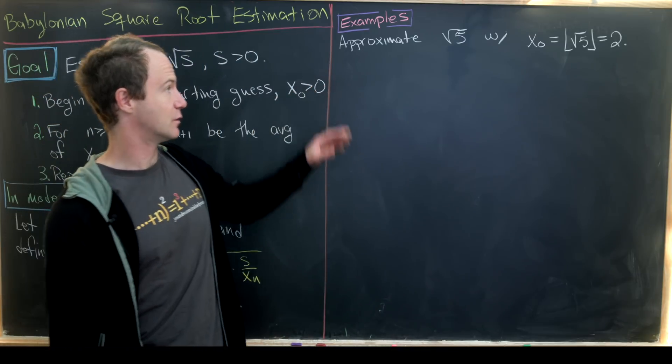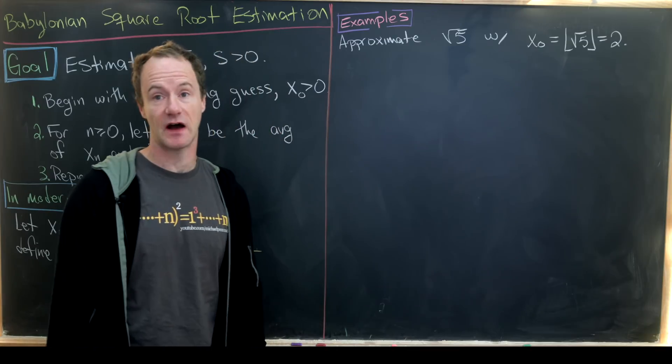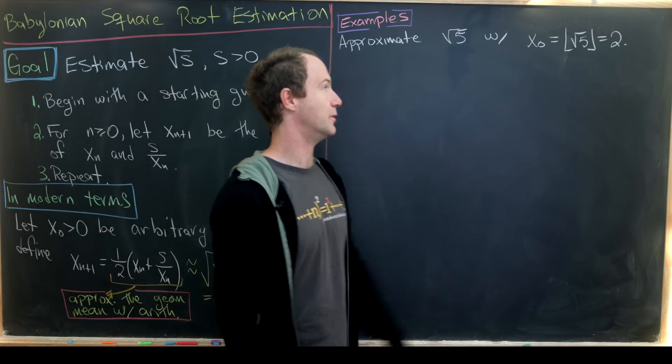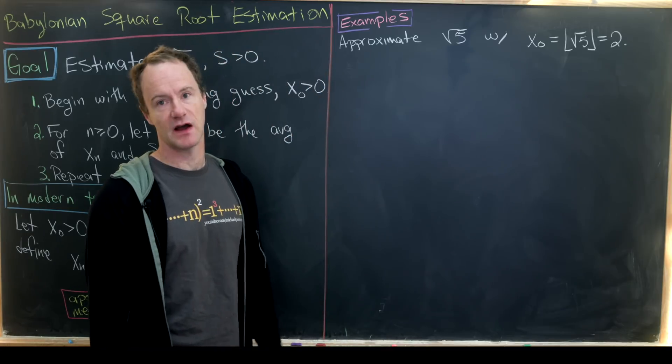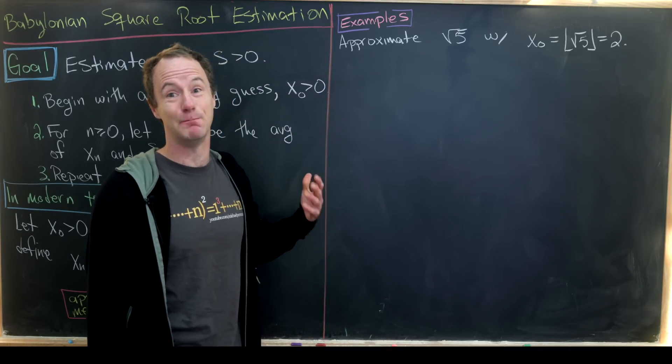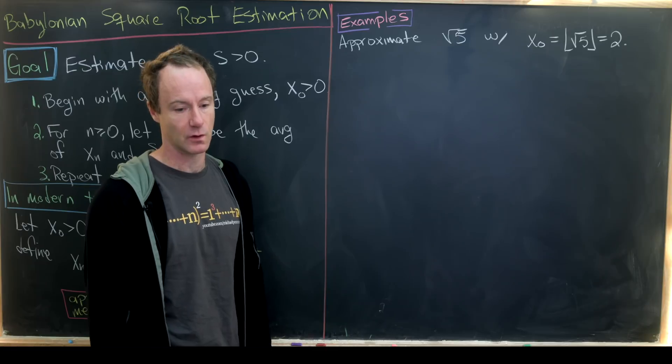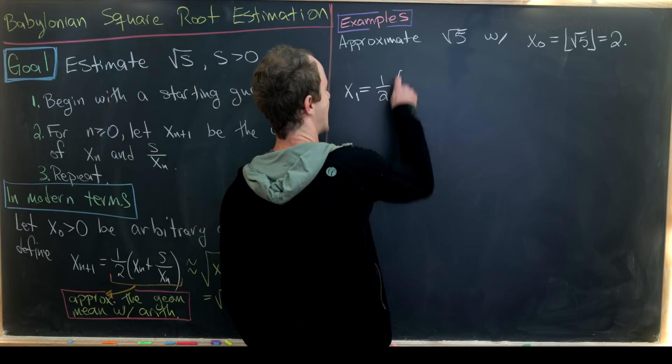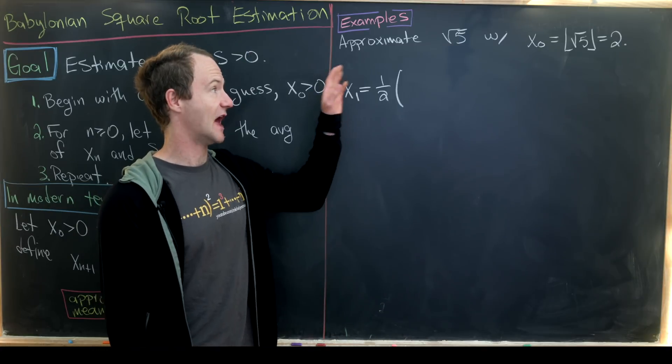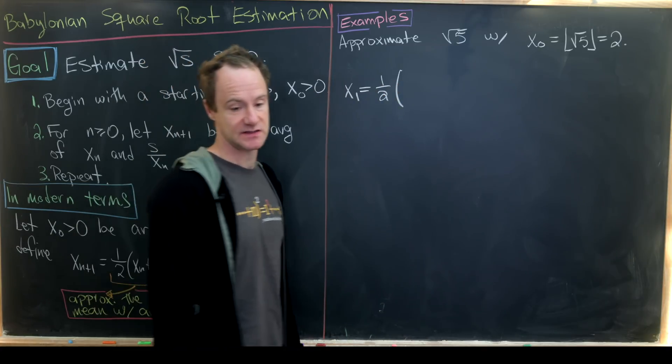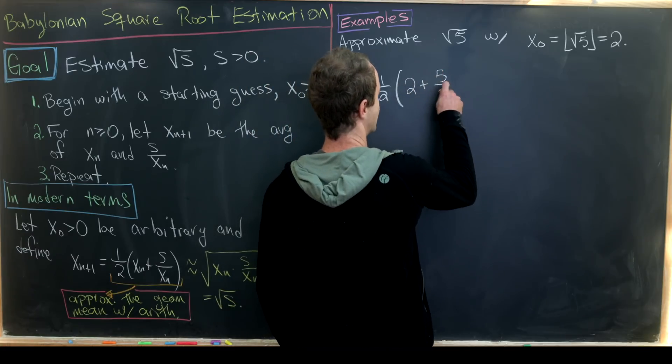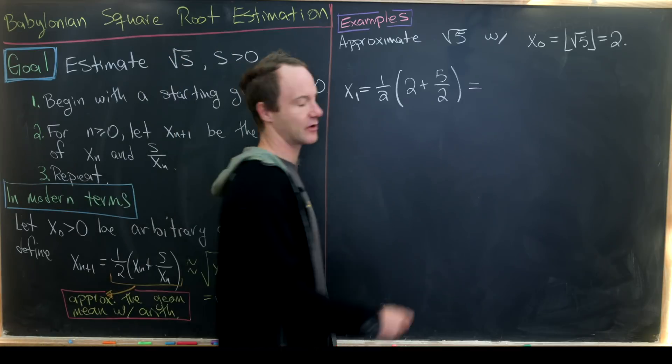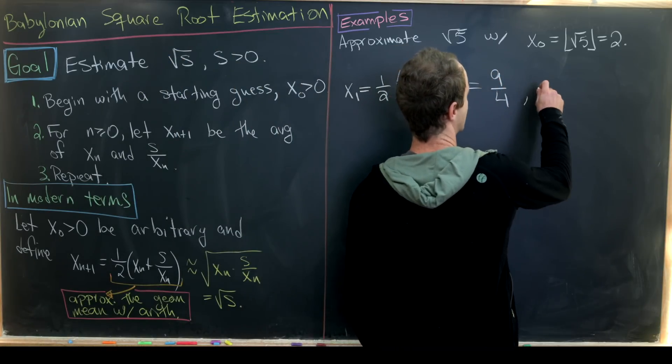For our first example, we'll approximate the square root of 5. We'll pick a good starting value, and that starting value will be the floor of the square root of 5, which is clearly equal to 2, because 5 is just a bit bigger than 2 squared, which is 4. So let's calculate x₁. That's going to be ½ the average of x₀ and 5 over x₀, so 2 and 5 over 2. So that's a fairly simple calculation.